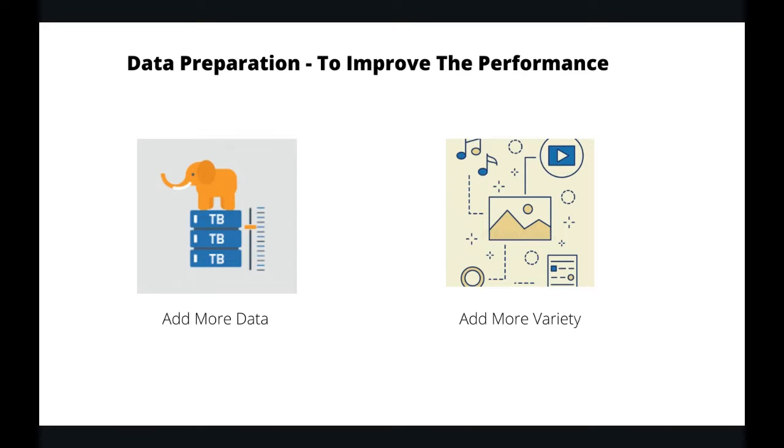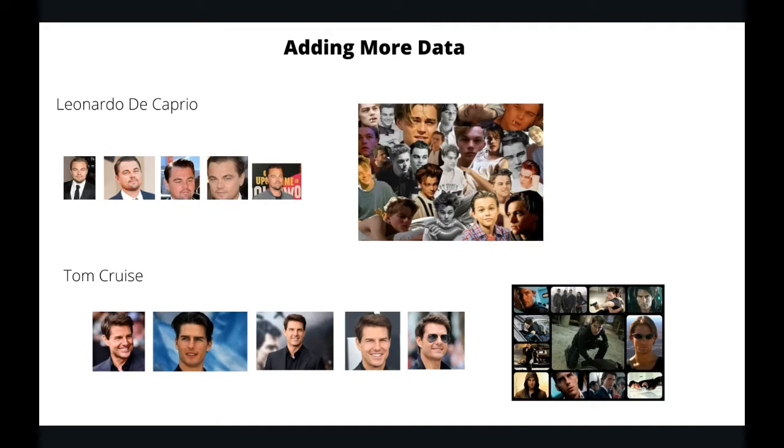In context to our model, what does adding more data mean? We could have added many more images of Leonardo DiCaprio and many more images of Tom Cruise. To start with, we had just added only five images of both. But if we would have added many more images, then the model would have performed better.